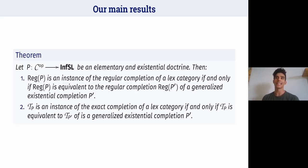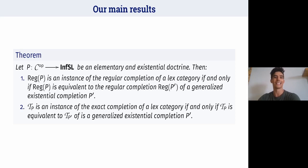Our main result is the following theorem. If we consider a doctrine P which is elementary and existential, then the regular completion of P is an instance of the regular completion of a lex category if and only if this category is equivalent to the regular completion of a generalized existential completion. Moreover, the triples-to-topos construction is an instance of the exact completion of a lex category if and only if it is equivalent to the triples-to-topos construction of a generalized existential completion.